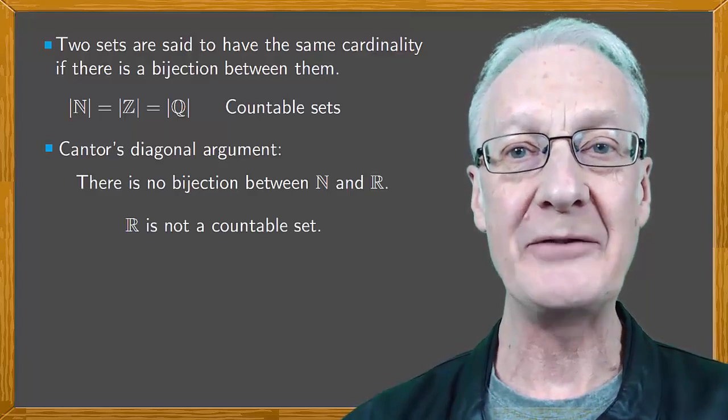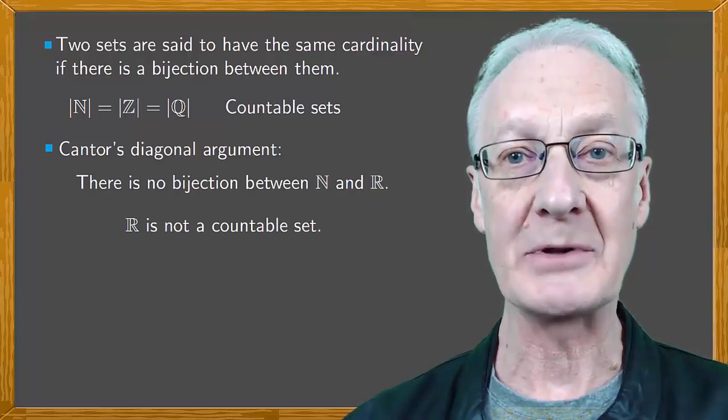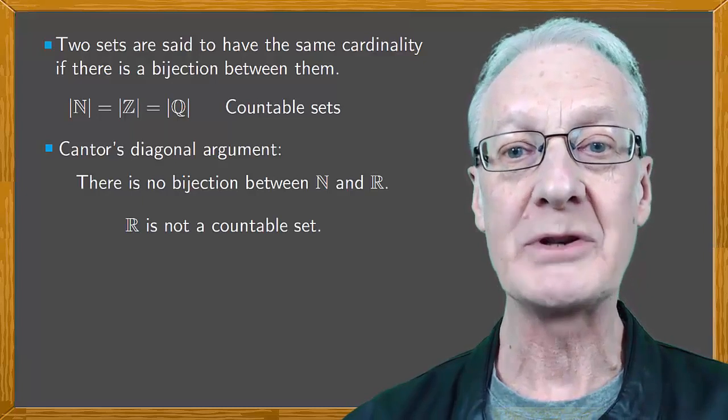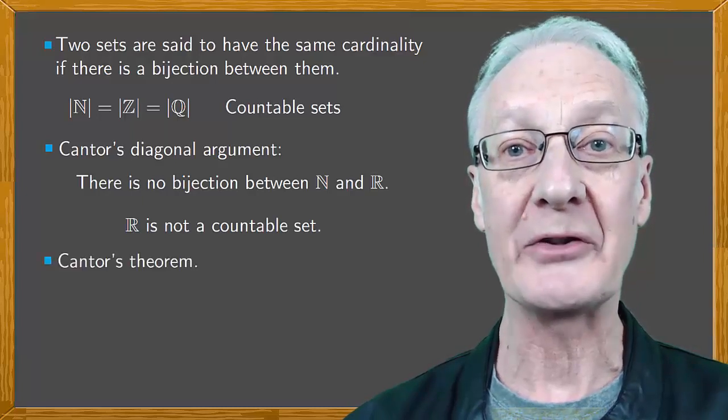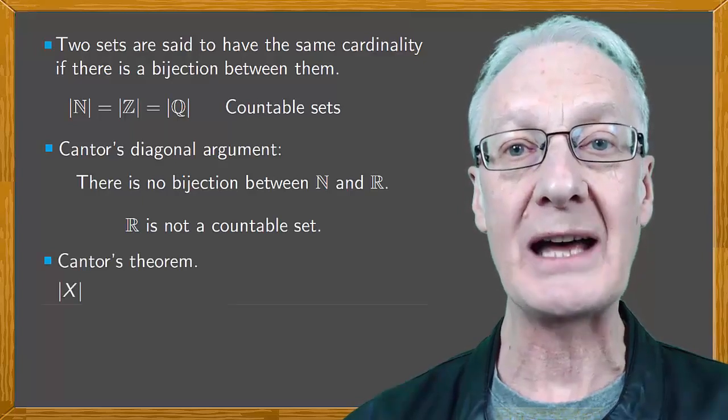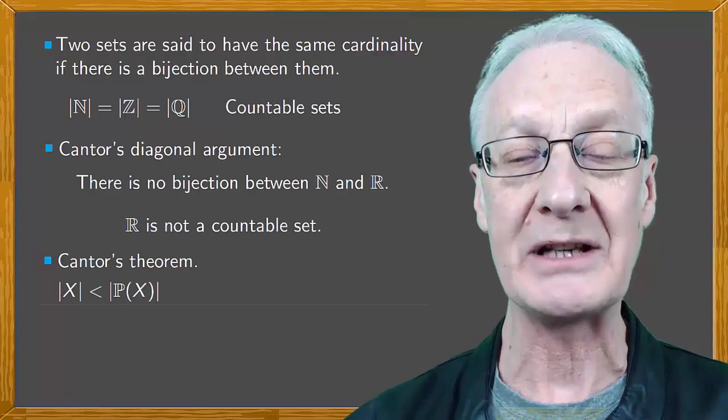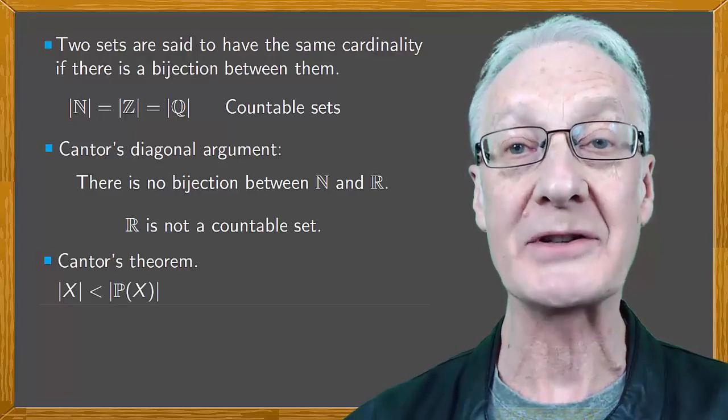To prove that there's an infinite number of infinities, we rely on another famous result of Cantor's, which is known simply as Cantor's theorem. This states that for any set X, the cardinality of X is strictly less than the cardinality of all the subsets of this set.